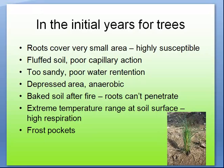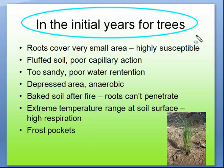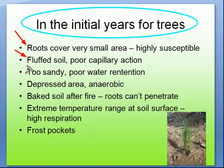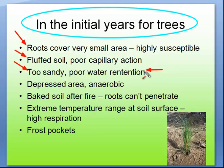What challenges do trees face in the initial years during stand initiation? First, roots cover very small areas — maybe a centimeter or two — so they're highly susceptible to changes in moisture content. If the soil is fluffed and disturbed with a lot of air in between, trees have very poor capillary action and die. If the soil is too sandy — like big round ball bearings — water travels through quickly with very poor water retention, so only very specialized trees like jack pine can survive there.